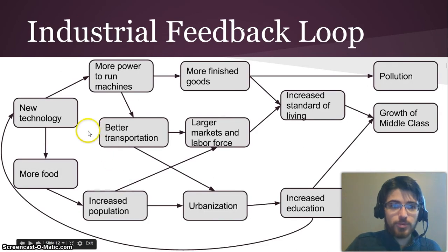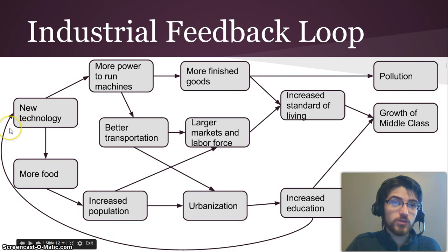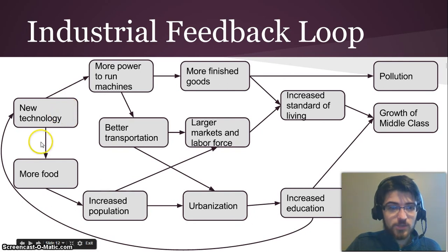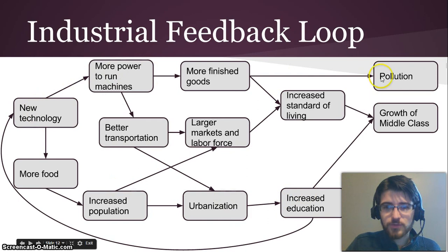Here's the feedback loop. New technology led to more food, which led to increased population, which led to urbanization, which then led to increased education — because with more people in one place it's easier to educate them, and there were pushes to educate people during this time. That increased education leads back to new technology, because newly educated people can handle more complex jobs and more people are capable of working on new technological improvements. New technology also led to more power to run machines, which led to more finished goods and better transportation. Better transportation led to larger markets — you could send goods much longer distances — and a larger labor force. Those goods and larger markets led to an increased standard of living because finished goods were cheaper. So new technology leads to increased standards of living and increased education, though pollution was also produced. In the end, there was growth of the middle class, which changed the whole way the economy worked.